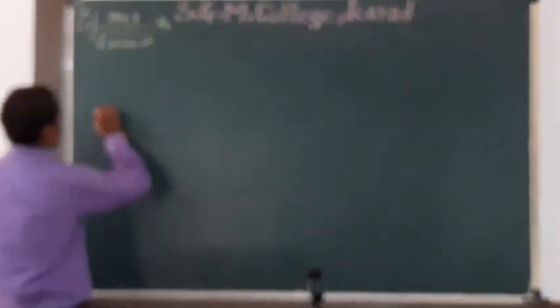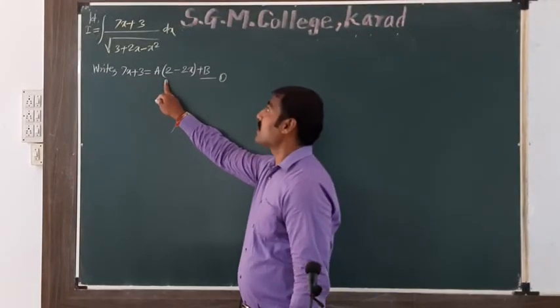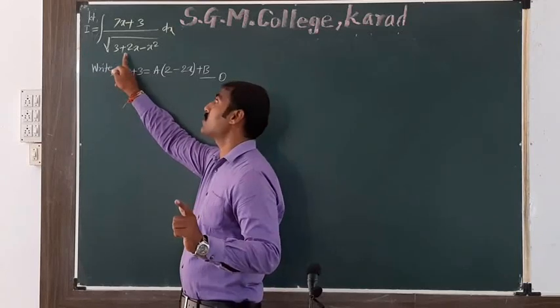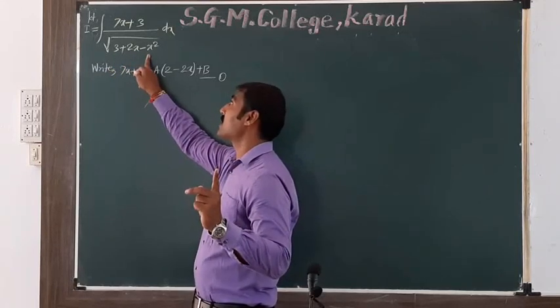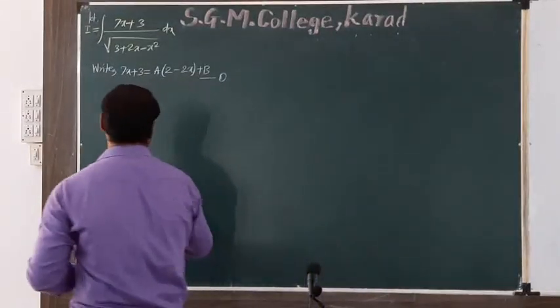Starting with our first example: evaluate the integration of (7x + 3) divided by root of (3 + 2x - x²) dx. First step is to write the numerator 7x + 3 as A into the derivative of the quadratic equation (3 + 2x - x²). The derivative of 3 is 0, derivative of 2x is 2, derivative of x² is 2x. So derivative is 2 - 2x. On multiplying by A, we write this as 2A - 2Ax + B, which rearranges to -2Ax + (2A + B). This is equation number one.